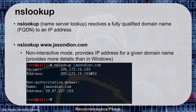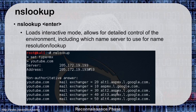The first tool is NS Lookup, which stands for Name Server Lookup. It resolves a fully qualified domain name to an IP address. For example, computers don't understand domain names like jasondion.com — they understand numbers. So if I do an NS Lookup of jasondion.com, I get back the IP address of my server — in this case, 205.172.19.193. This is non-interactive mode: I give it the command and the website, and it returns the information. There is also an interactive mode.